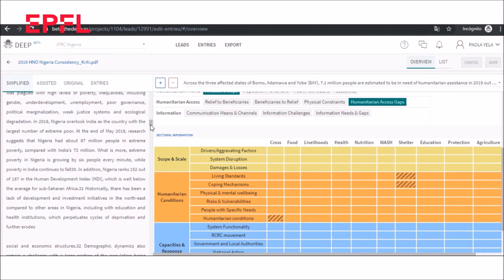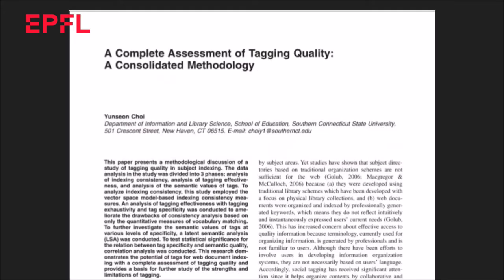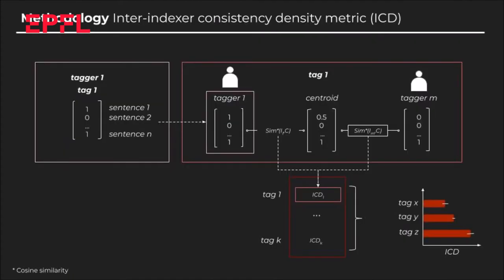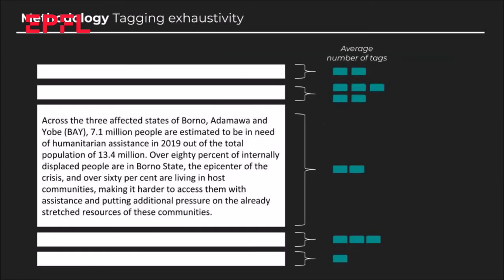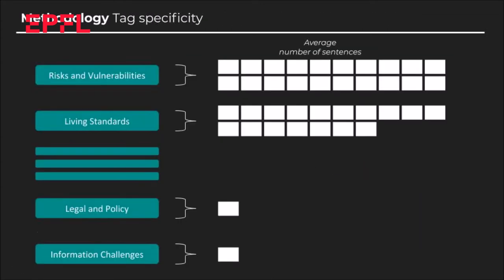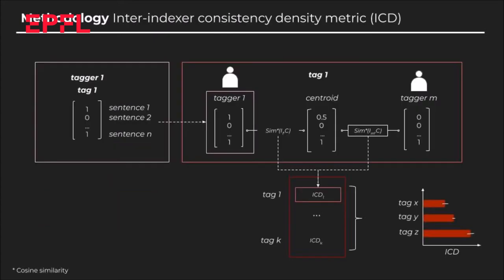For this, I propose a quality assessment procedure with a data analysis approach. Based on the methodology proposed by Junson Choi in 2014, I used vector-based metrics to measure how consistent the tags are, also how exhaustively the pieces of information are tagged, and how specific the tags used are. The flexibility of the methodology and the number of taggers and tags opened the door for its use by other organizations and in other contexts.